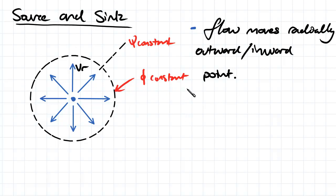What we want to do is work out the stream function and the velocity potential so we can describe this flow. To do that, we're going to use the conservation of mass.